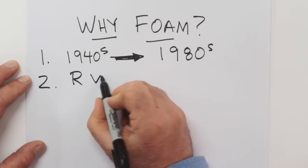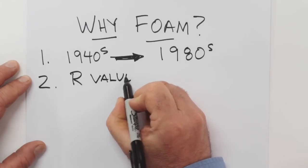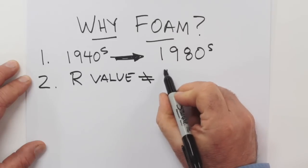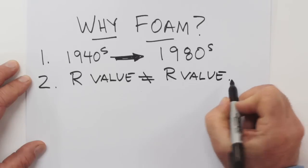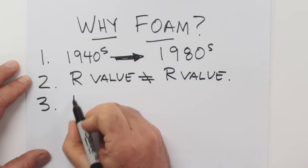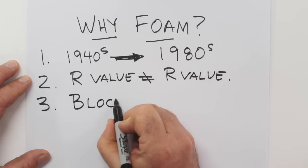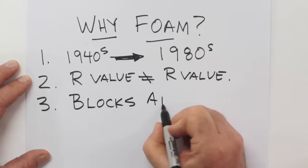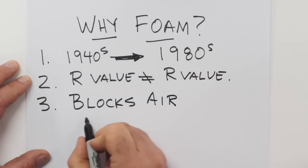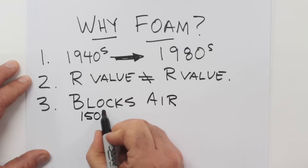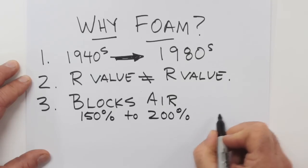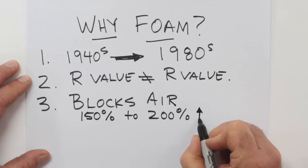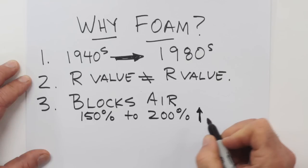Something that really impresses me about spray foam insulation is its real-world R value. You can take two kinds of insulation products with the same R value, but you can get markedly different energy performance in the real world. Now, why would that be? Well, it comes down to the ability of an insulation to block air. Some insulations can allow drafts and air currents to move through them. Spray foam insulation effectively shuts that down. So what you get is about 150% or 200% better energy performance with spray foam than a comparable amount of other kinds of insulation with the same R value.